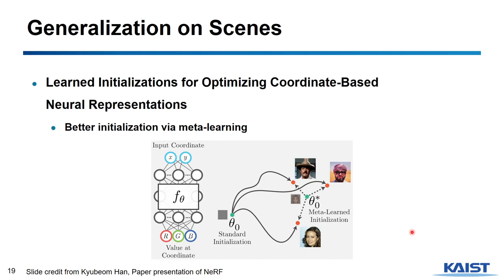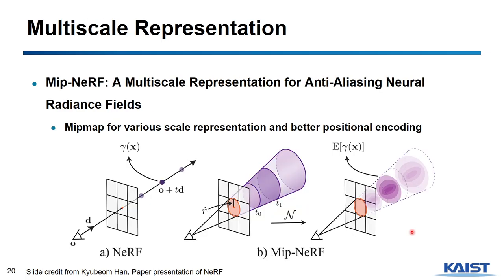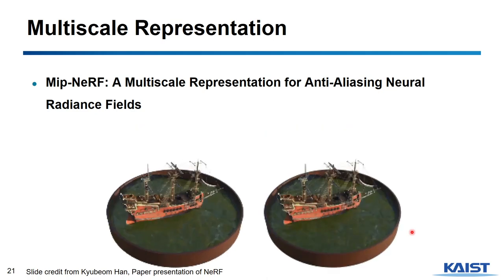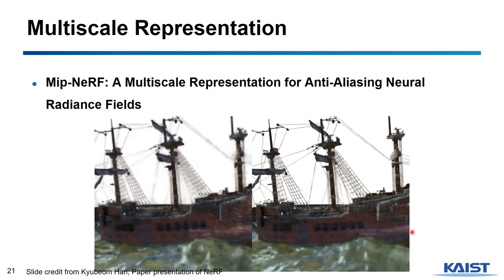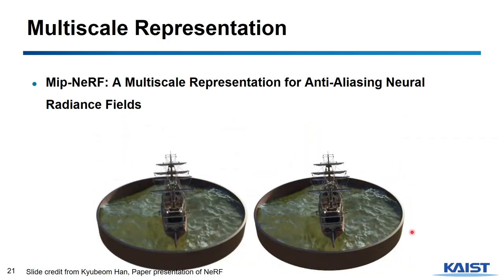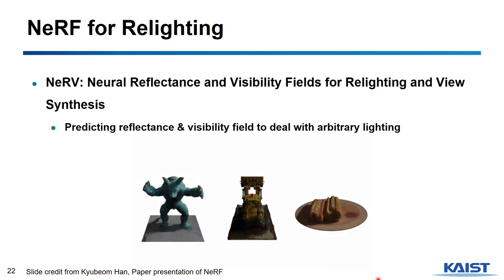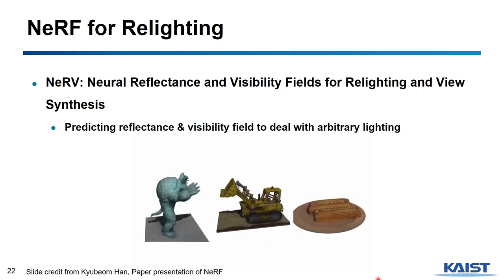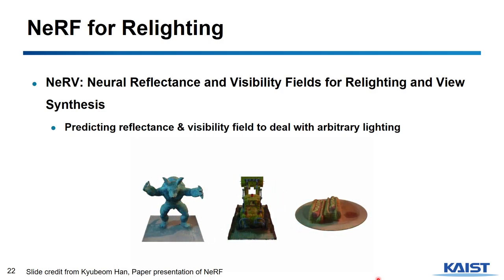Another paper addresses generalization across scenes using meta-learning for better initialization. Another variant handles large scenes — when we zoom in, this version can handle detail better than the original NeRF. The black result is the original NeRF and the white one is this improved mid-NeRF.